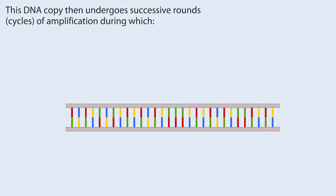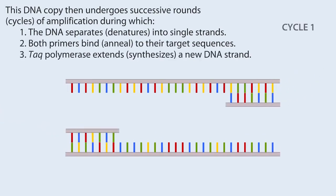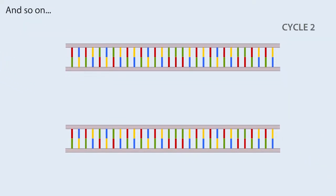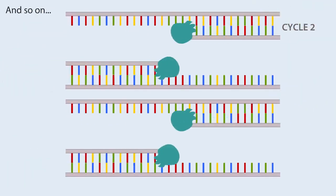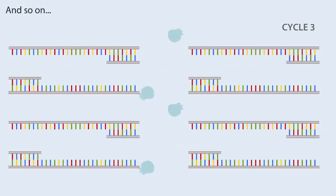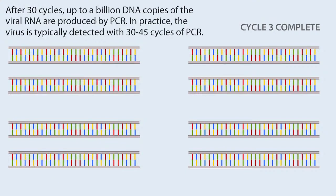This DNA copy then undergoes successive rounds, or cycles, of amplification during which the DNA separates (denatures) into single strands, both primers bind (anneal) to their target sequences, and TAC polymerase extends and synthesizes a new DNA strand. The number of copies of the target region doubles with each cycle. After 30 cycles, up to a billion DNA copies of the viral RNA are produced by PCR.